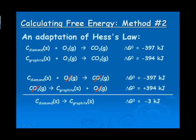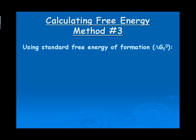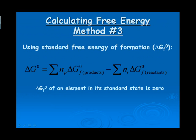So the first method was using the Gibbs-Helmholtz equation, and the second method for determining the free energy of a reaction is using Hess's Law. The third method looks very similar to using the heat of formation to get the overall delta H. We can take the sum of the delta G of the products minus the sum of the delta G of the reactants, using the moles from the balanced equation, and we can get an overall delta G. You could go to a table of delta G values, look them up for your various products and reactants, sum them up, and subtract products minus reactants to get the overall delta G. Note that the delta G formation of an element is 0 at its standard state, and the same was true of delta H for an element — it was also equal to 0.